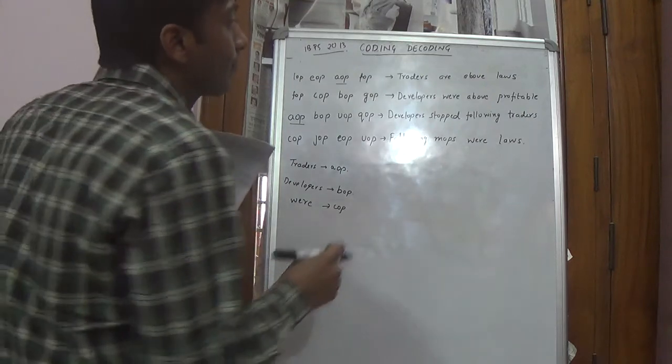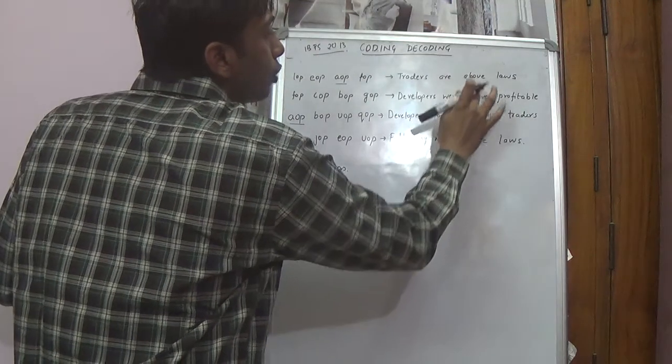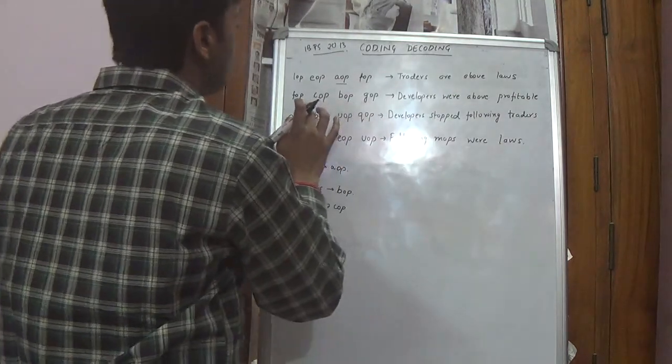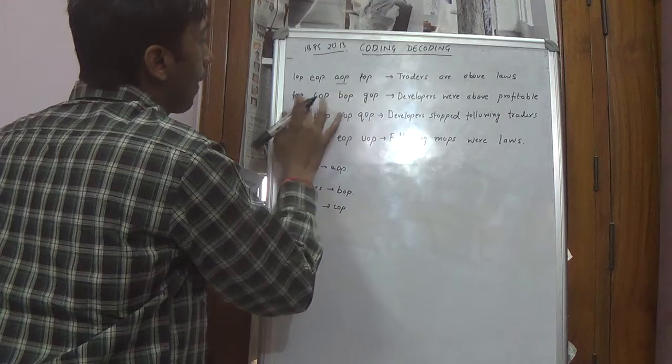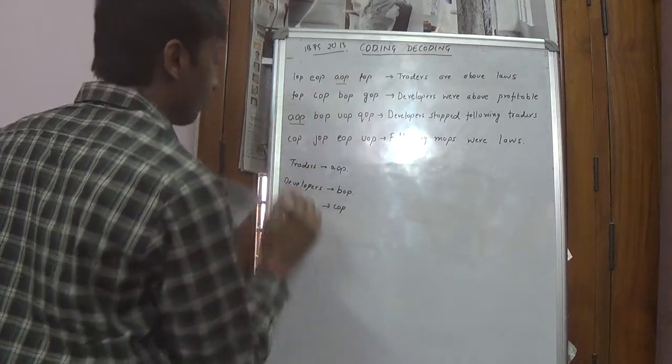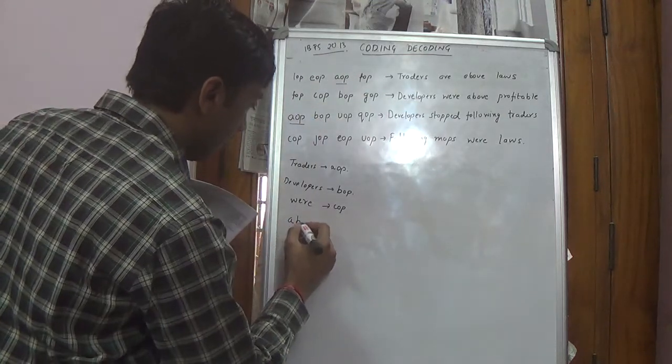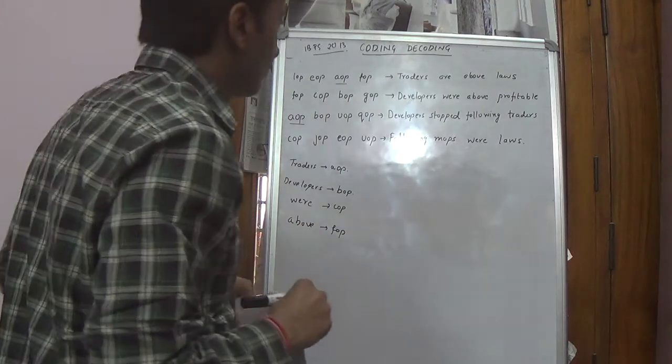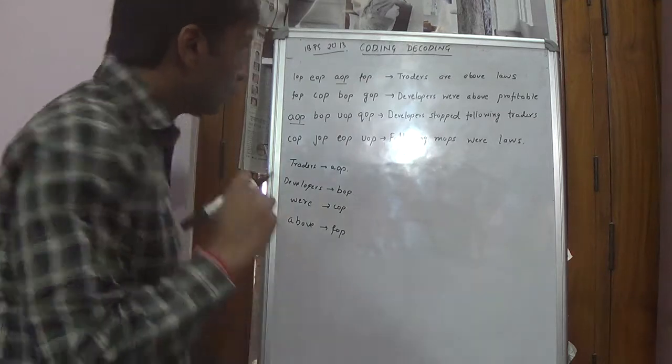Fourth one, we would take ABOVE. So ABOVE is in these two sentences, no other sentence. So ABOVE could be FOP. ABOVE is termed as FOP. Now we have got four words.